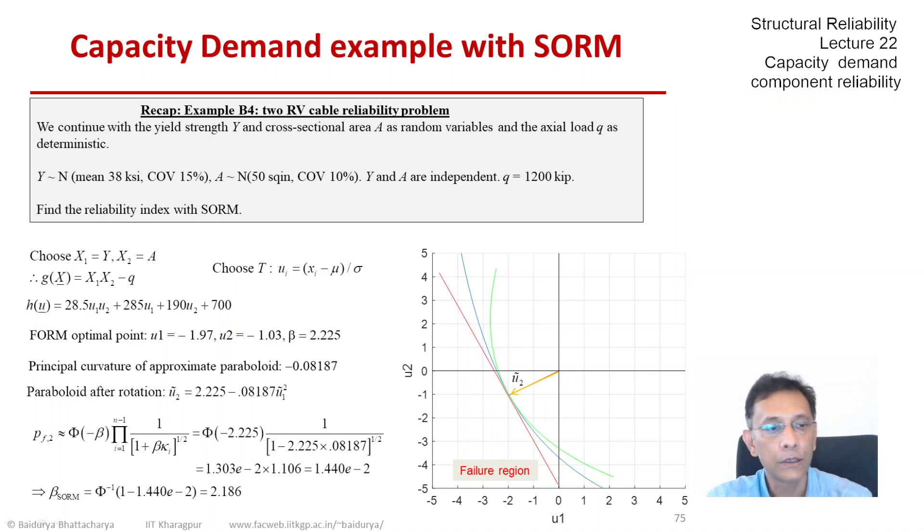Now this is interesting because we had in FORM 2.225 which we knew actually was an overestimation of reliability. So now we have reduced the reliability to about 2.186, the index.